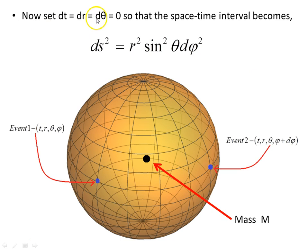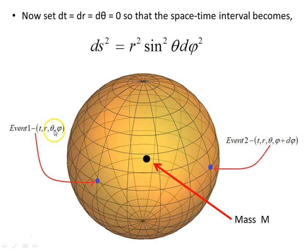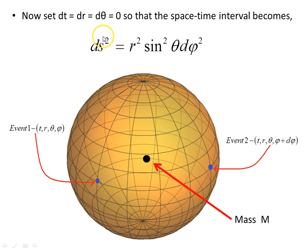Now let's set dt, dr, and dθ to zero. Then the spacetime interval becomes ds squared equals r squared sine squared theta dφ squared. Here's our mass in the centre of our sphere, and now our two events have the same time coordinate, the same radial coordinate, and the same polar angle theta — they just differ in the azimuthal angle φ. They're sitting on the surface of the sphere, and the square of the physical distance between them, ds squared, is this expression r squared sine squared theta dφ squared.